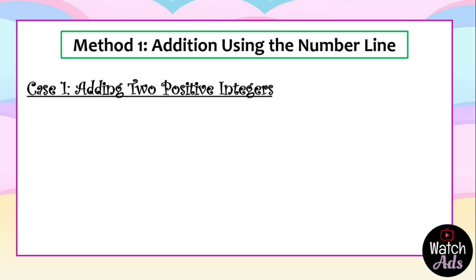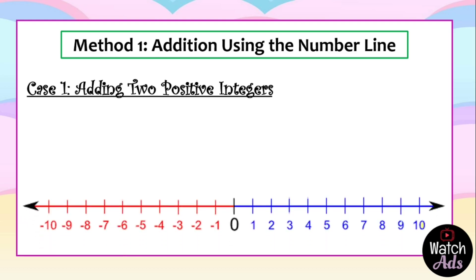We have the first case: adding two positive integers. Here's our number line and our given is four plus five. Let me introduce the parts of addition. The addends are the numbers we are adding up — it could be two, three, four numbers or more. In this case we have two addends: four and five. The answer in addition is called the sum.